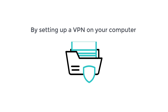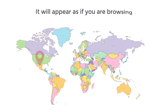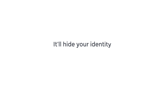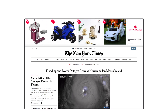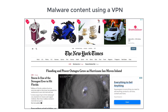By setting up a VPN on your computer, you can protect your browsing data, and it will appear as if you are browsing from a different city or country. It will hide your identity by replacing your IP address with another IP address. We will also see how you can block ads, popups, and malware content using a VPN.